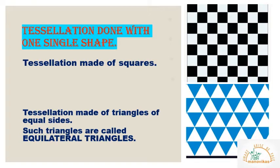Tessellation can be done by using a single shape or by using a combination of more than one shape. Let us see some examples of tessellation done by using the same shape, that is one single shape. The first figure you can see is of a chess board. It is an example of tessellation made by using squares.